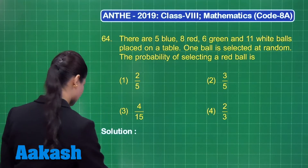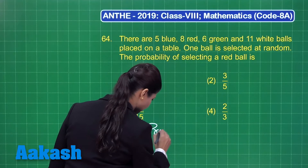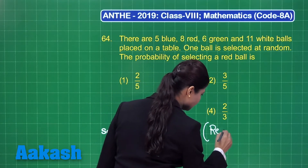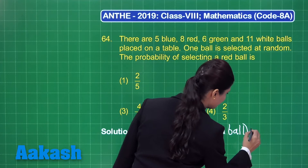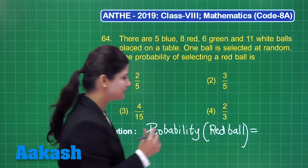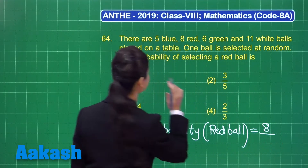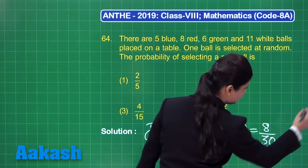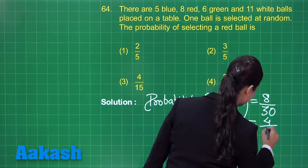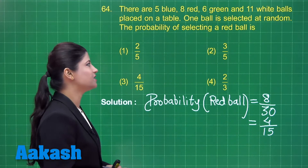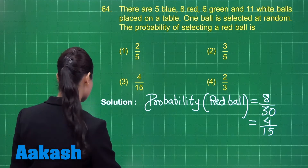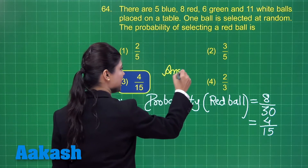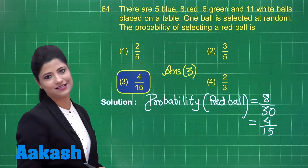Here we need to obtain the probability of getting a red ball. The probability of getting the red ball means number of red balls upon total number of balls. The number of red balls is 8 and the total number of balls is 5 plus 8 plus 6 plus 11, that is 30. So the probability is 8 upon 30, which reduces to 4 upon 15. The required probability of getting a red ball is 4 upon 15, which is option number 3.